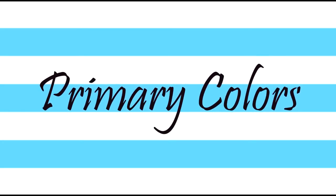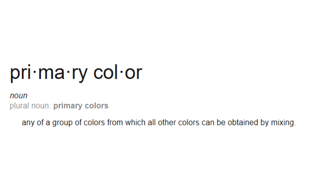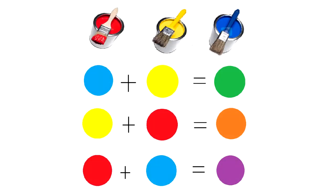Hey! As you can tell from the title, this video is going to be about the primary colors. By definition, primary colors are a group of colors from which all other colors can be obtained by mixing. Your primary colors are red, yellow, and blue.